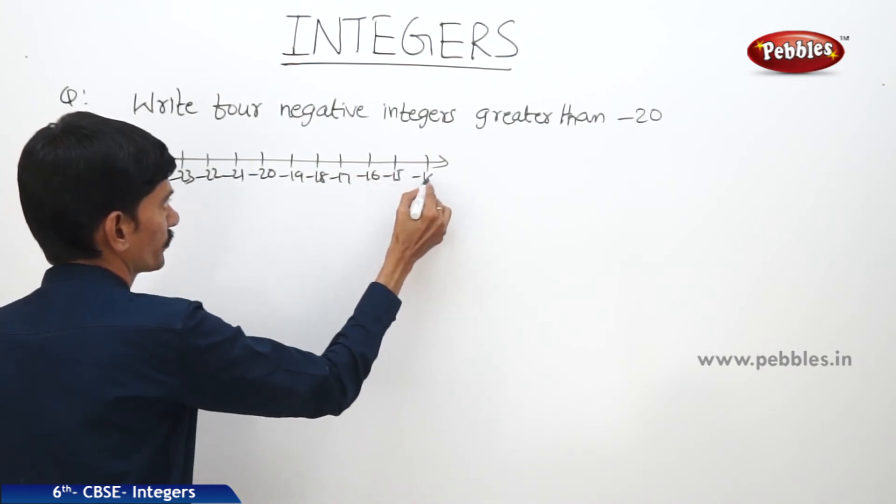So minus 19, minus 18, minus 17, minus 16 — these are 4 negative integers greater than minus 20.